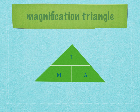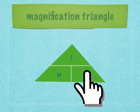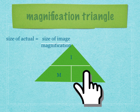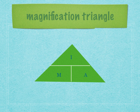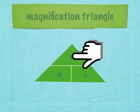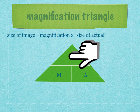If you want to calculate the actual size of an organism — for example, that fly — you want to calculate how big it actually is. You're going to put your hand over A. So, size of actual equals size of image divided by magnification. Then, lastly, if you need to calculate the size of the image, you put your finger over I. So, size of image equals magnification times size of actual.